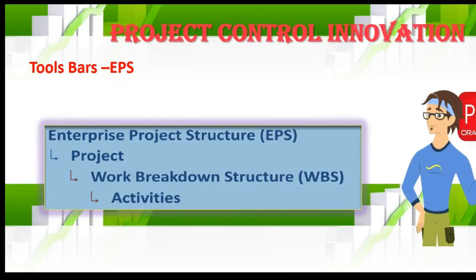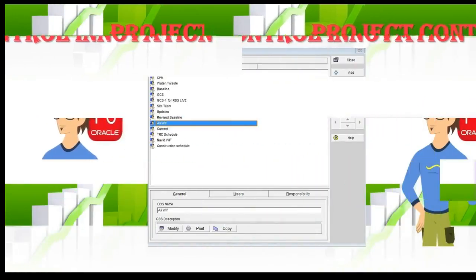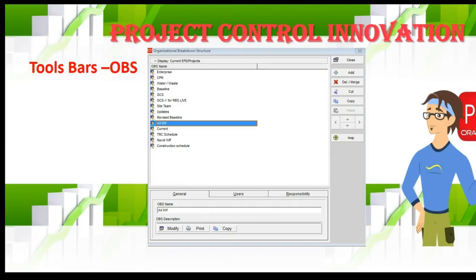The EPS (Enterprise Project Structure) is the highest level in the company. Under that you'll find all the projects, and under that the WBS (Work Breakdown Structure), and under the WBS all your activities. The OBS (Organization Breakdown Structure) is your company's staffing plan. We add all resources there so you can assign responsibilities — for example, assigning each project manager accountability for a specific project.